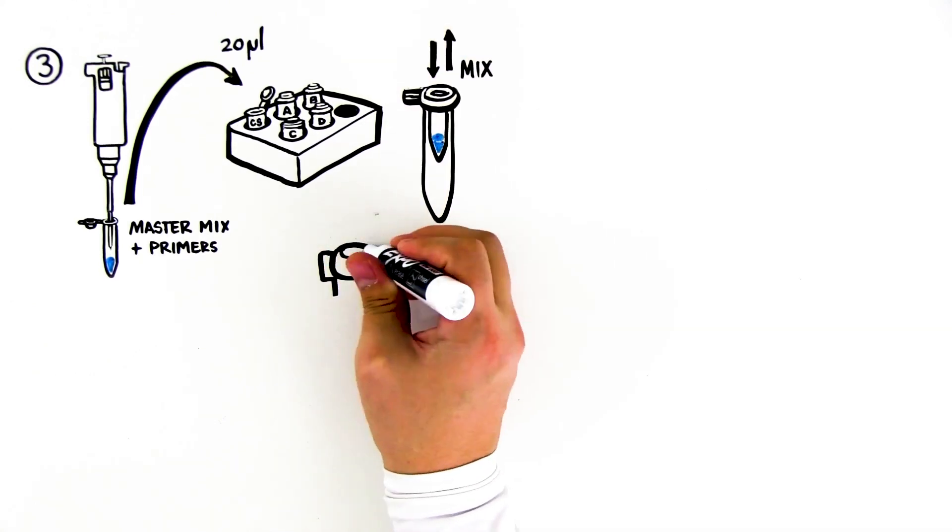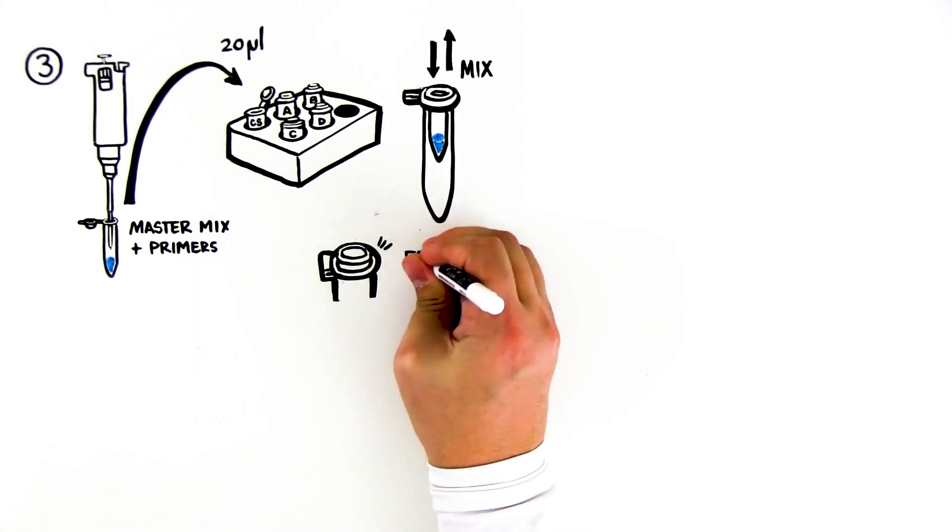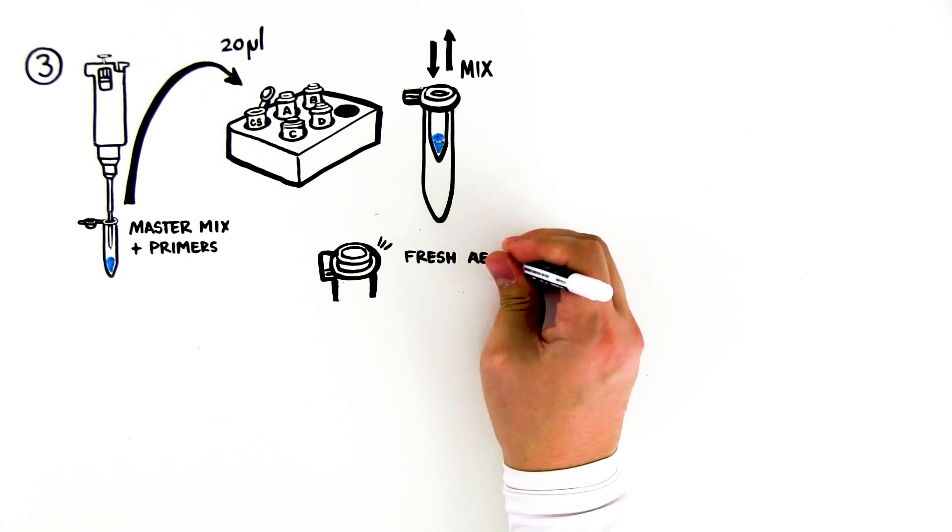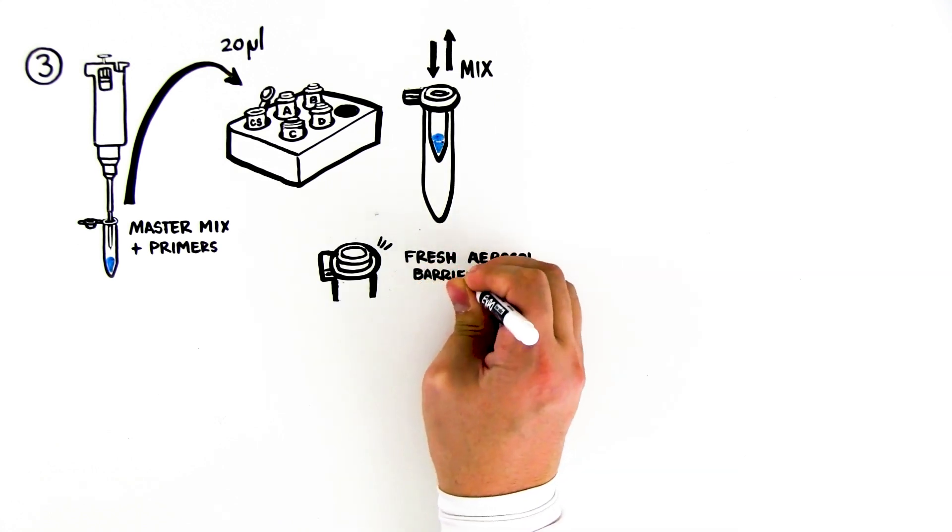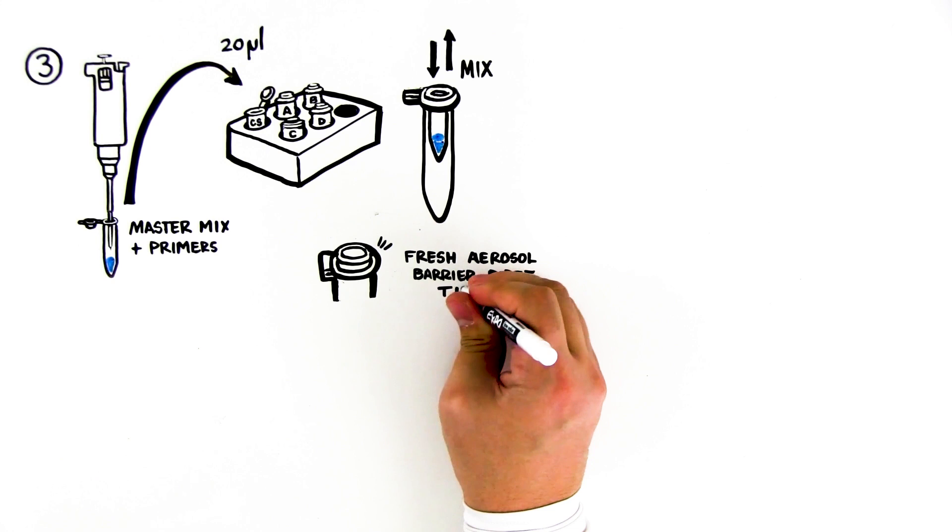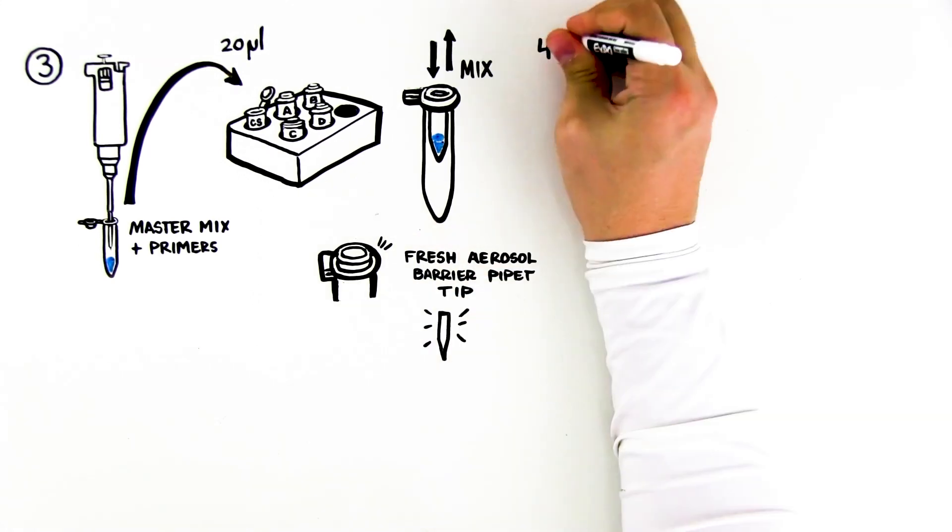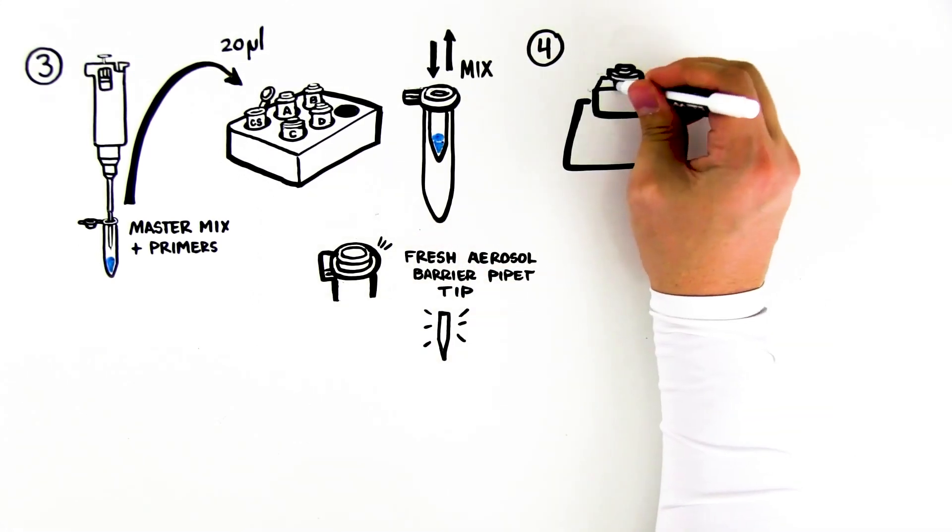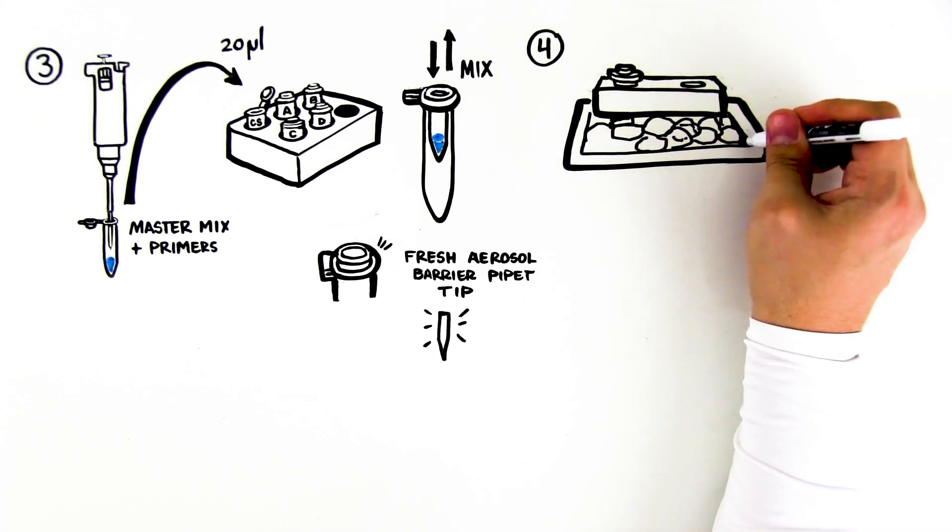Cap each tube after adding blue master mix. Step 4: Use a fresh aerosol barrier pipette tip each time. Immediately cap each tube after adding master mix. Place your capped PCR tubes in their adapters on ice.